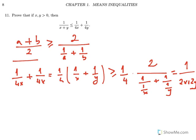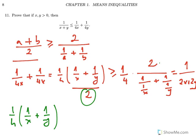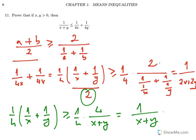I should have a 2 here because we have 2 terms divided by 2. So if I take this 2 to the other side, I must have 2 here. So I will have 1 over 4 times (1 over x plus 1 over y) is greater than or equal to 1 over 4 times 4 over (x plus y). The 4s cancel each other, so we have 1 over x plus y.